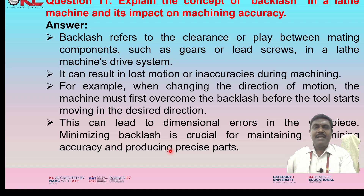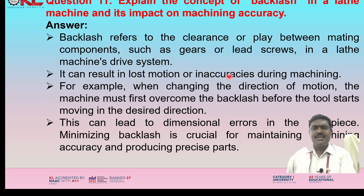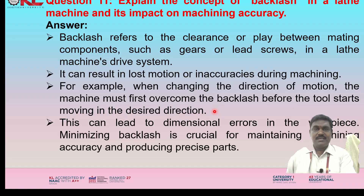Explain the concept of backlash in a lathe machine and its impact on machining accuracy. Backlash refers to the clearance or play between mating components such as gears or lead screws in a lathe machine's drive system. It can result in lost motion or inaccuracy during machining. For example, when changing the direction of motion, the machine must first overcome the backlash before the tool starts moving in the desired direction. This can lead to dimensional errors in the workpiece, so minimizing backlash is crucial for maintaining accuracy and producing precise parts.